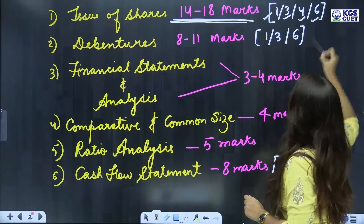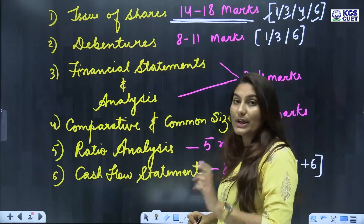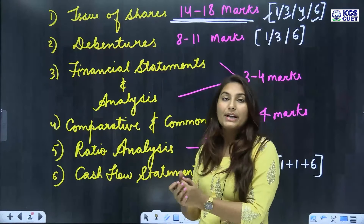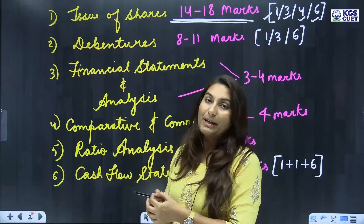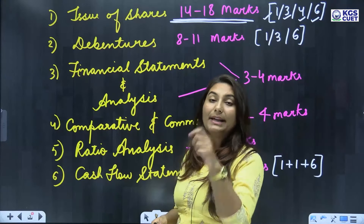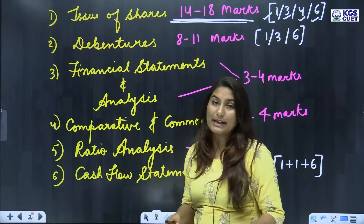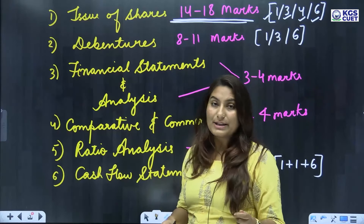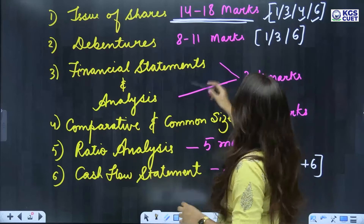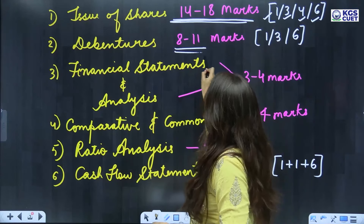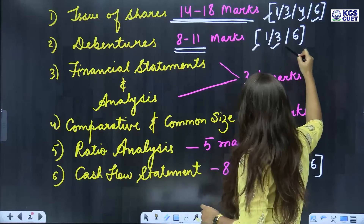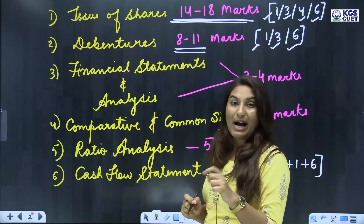Then it comes to debentures. In debentures, you will get similar journal entries. Collateral security is also a topic you can see questions on in debentures. In debentures, you will get 1 mark, 3 marks, and 6 marks questions in the paper.